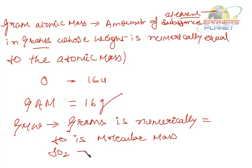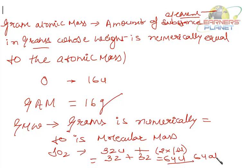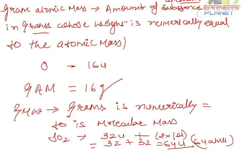For example, SO₂: the atomic mass of sulfur is 32 u, and 2 × 16 u for two oxygen atoms = 32, giving a molecular mass of 64 u or 64 amu. Therefore, the gram molecular mass of SO₂ is 64 grams.